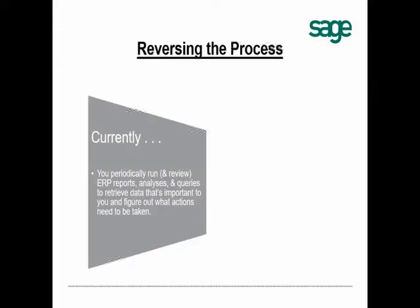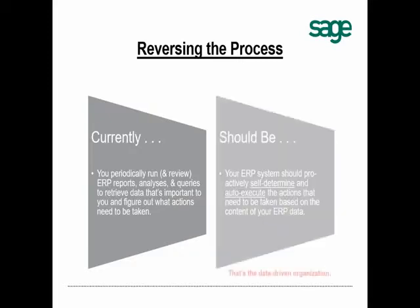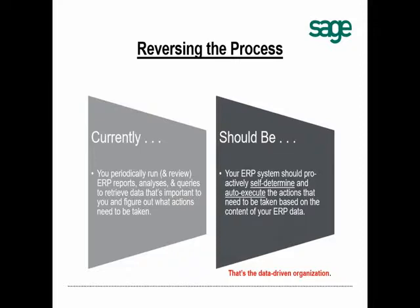These are what we call 'if only we had known' scenarios — business conditions that happen in daily business life where, had you known sooner, you could have prevented a problem, saved a customer, or avoided lost revenue. The concept behind a data-driven organization is to reverse the process: instead of you periodically running reports to retrieve data from Sage 300, you enable Sage 300 to proactively determine when critical business conditions have occurred and reach out to you.